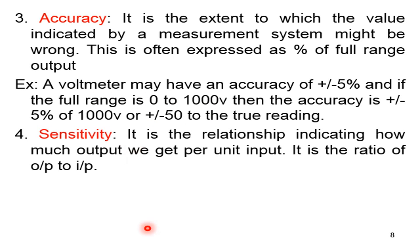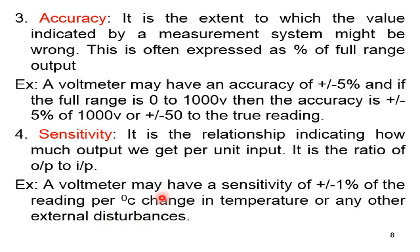The next terminology is sensitivity, defined as the ratio of output to input — how much output we get per unit input. For example, a voltmeter may have a sensitivity of plus or minus 1% of the reading per degree change in temperature or any other external disturbance. That is a good example of sensitivity.